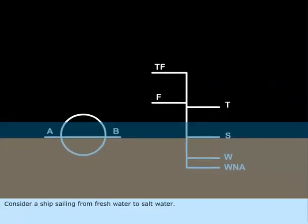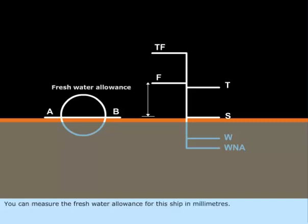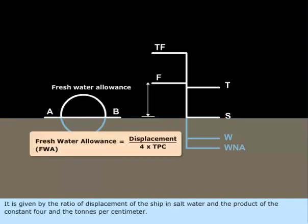Consider a ship sailing from fresh water to salt water. You can measure the fresh water allowance for this ship in millimeters. It is given by the ratio of displacement of the ship in salt water and the product of the constant 4 and the tons per centimeter.